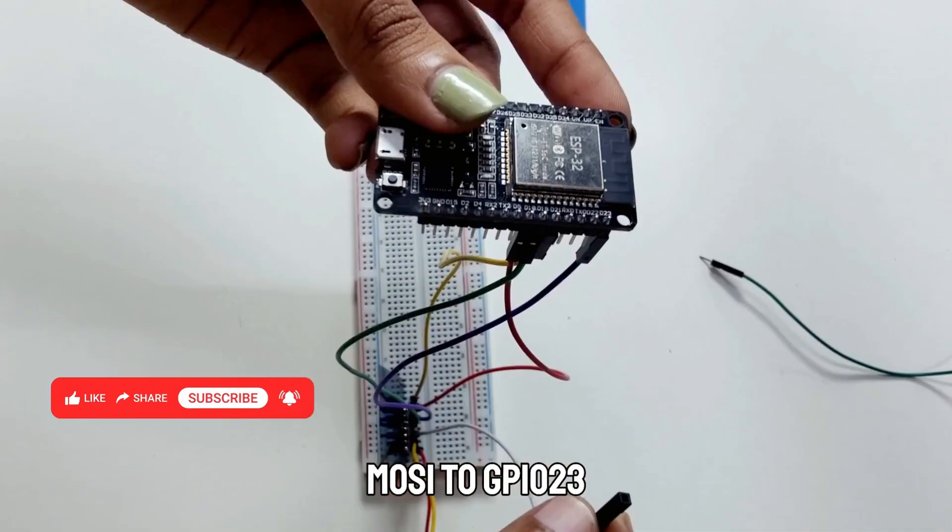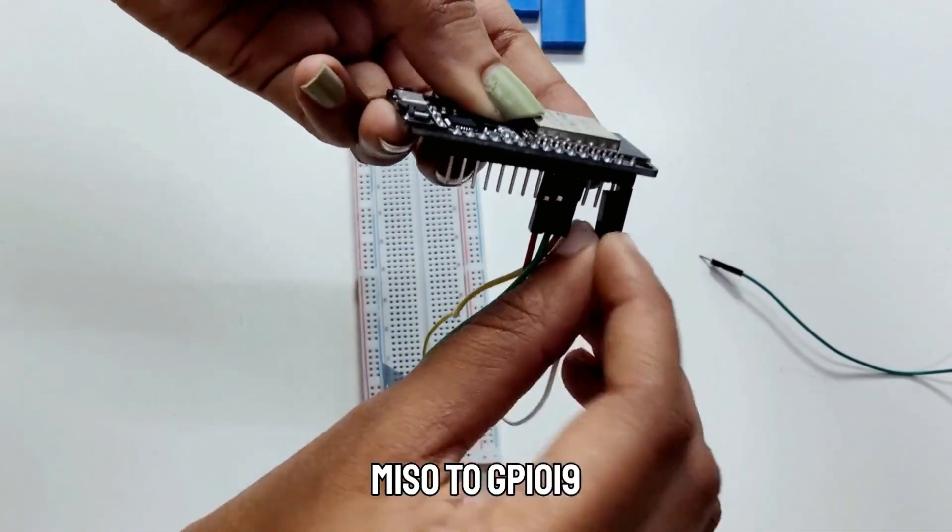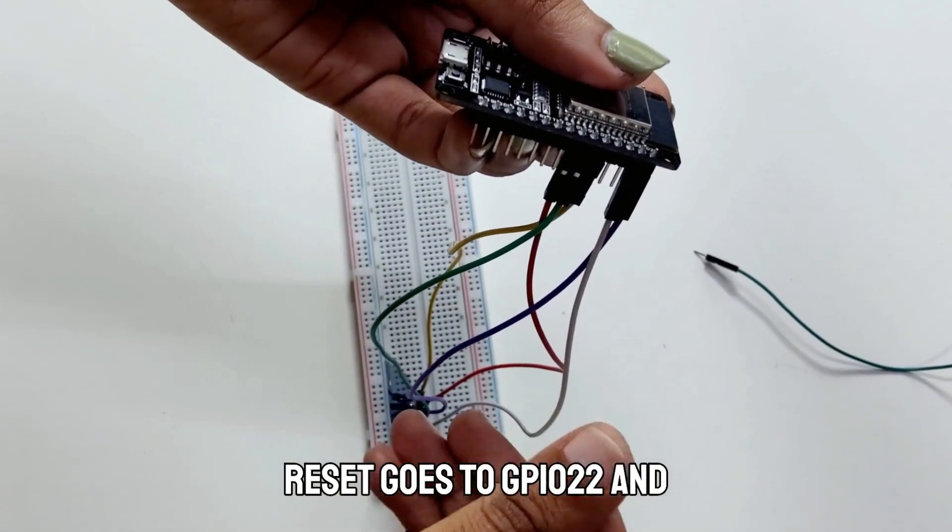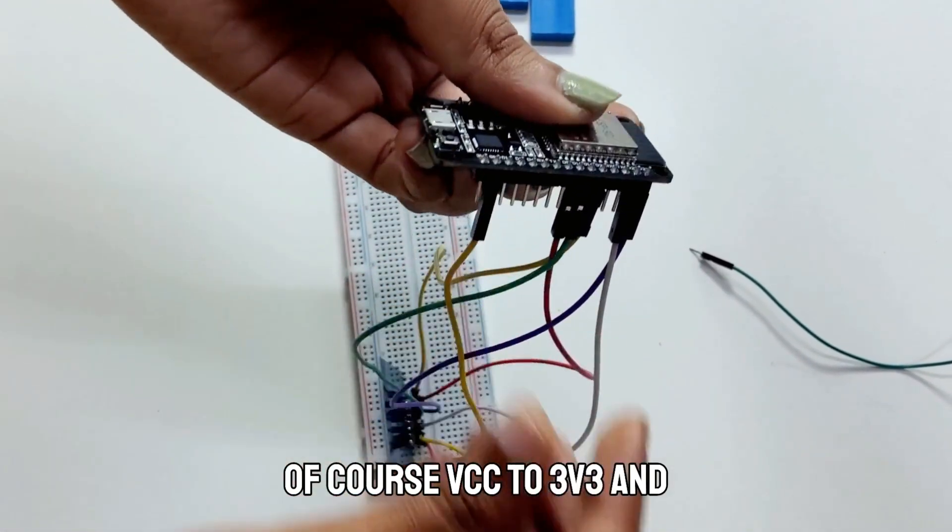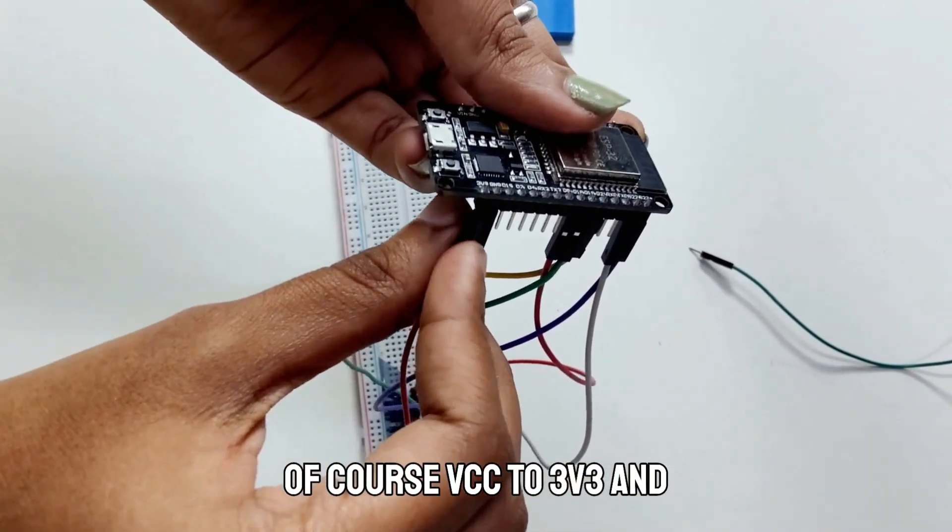MOSI to GPIO23, MISO to GPIO19, RESET goes to GPIO22 and of course VCC to 3v3 and ground to ground.